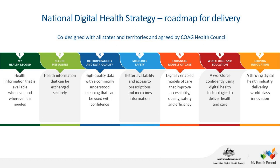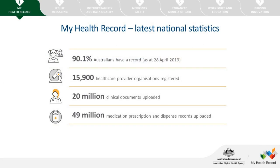As of April 2019, 90% of Australians have a My Health Record. Approximately 15,900 healthcare provider organisations are also registered, including 7,100 GP organisations, 832 public and 188 private hospitals, 4,730 community pharmacies, 236 aged care facility services and 2,750 other organisations.